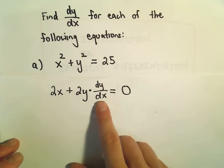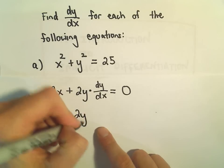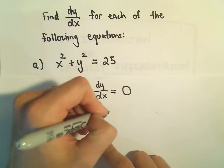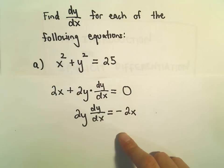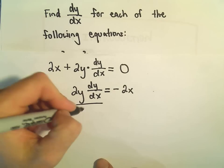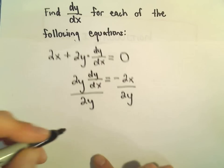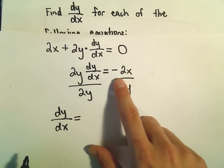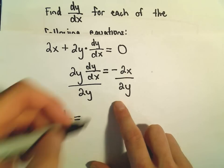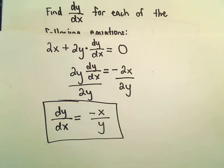Normally we want dy/dx all by itself — isolated. So what I'm going to do is subtract 2x from both sides. If we subtract 2x from both sides, we'll get negative 2x, and then we can divide both sides by 2y. Then we'll have our solution: dy/dx equals — we can simplify — negative 2 over 2 is just negative 1, so it's negative x over y. And now we've got our derivative.